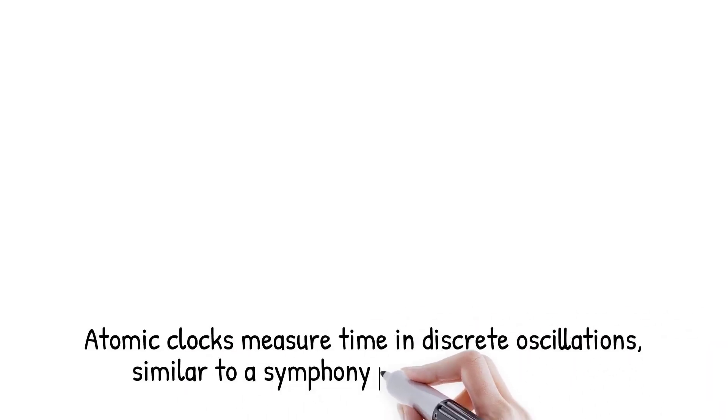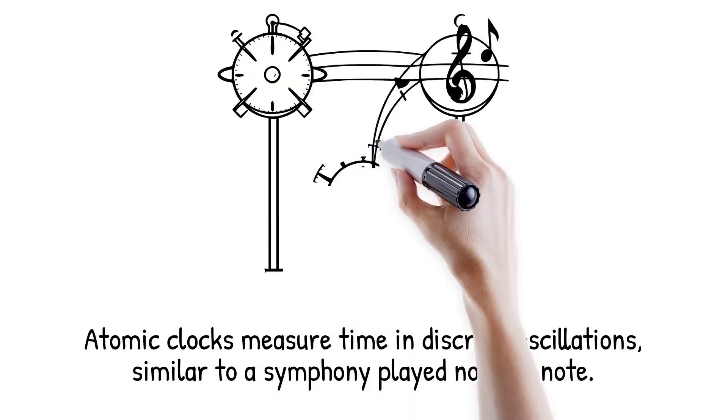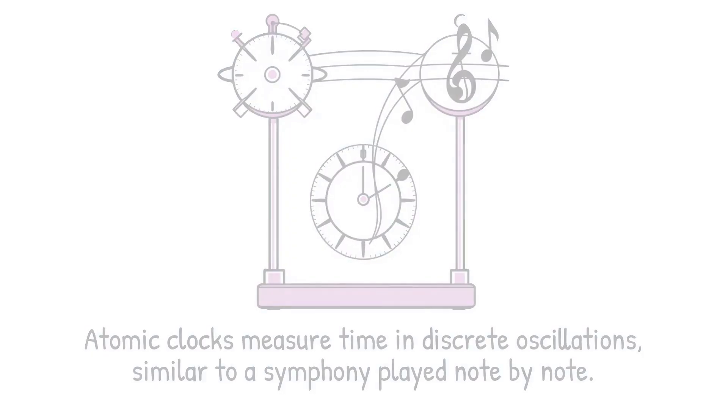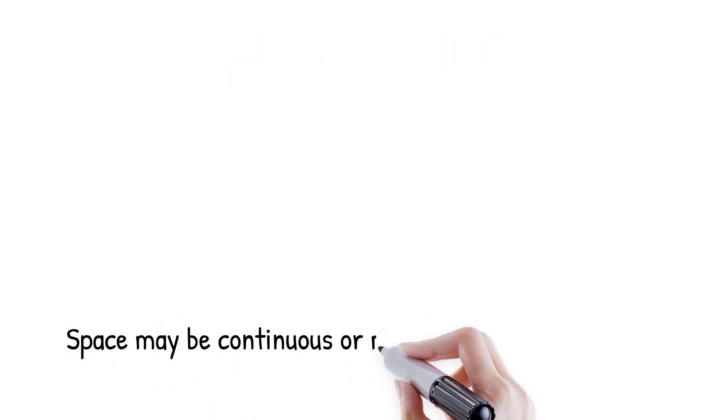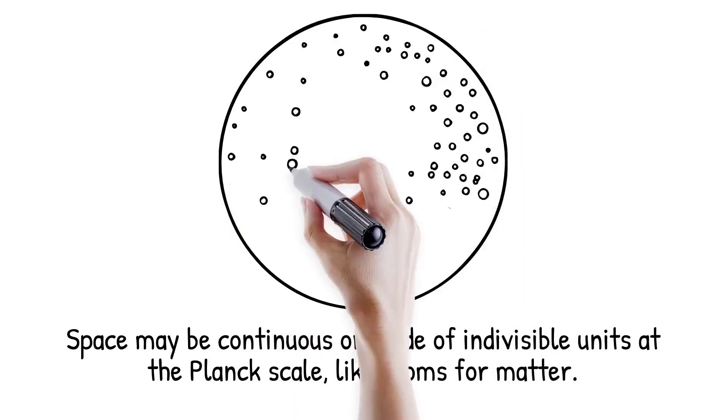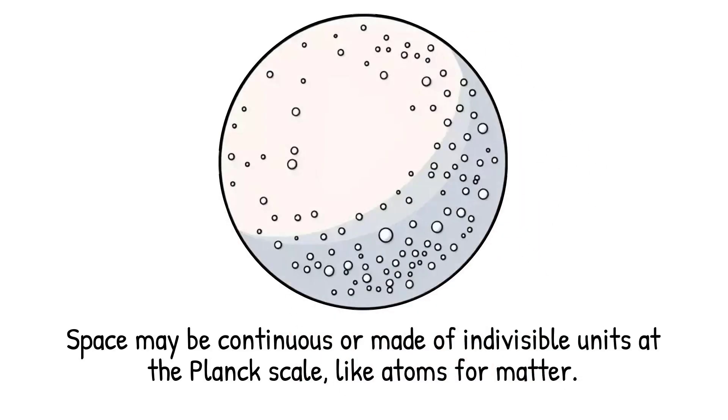Space also faces the question of continuity versus discreteness. Relativity describes space as smooth, but quantum gravity suggests spacetime may be granular at the Planck length, 10 to the minus 35 meters. If space is quantized, the smooth geometry we perceive would be an approximation of deeper discreteness. Just as matter is made of atoms, space itself might have indivisible units. At larger scales, these units blend into apparent continuity.